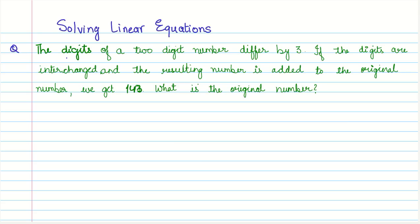Let us look at another interesting application of linear equations. We are given that the digits of a two-digit number differ by 3. If the digits are interchanged and the resulting number is added to the original number, we get 143. What is the original number? The whole secret of solving this type of problem is to understand it and formulate the correct equation.